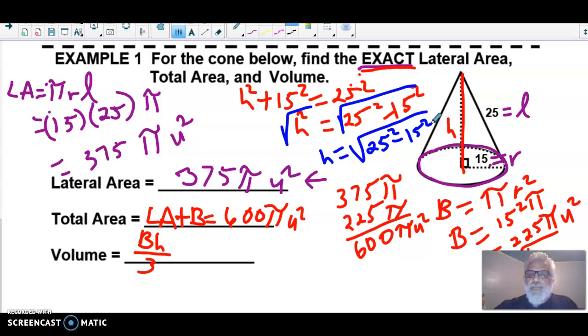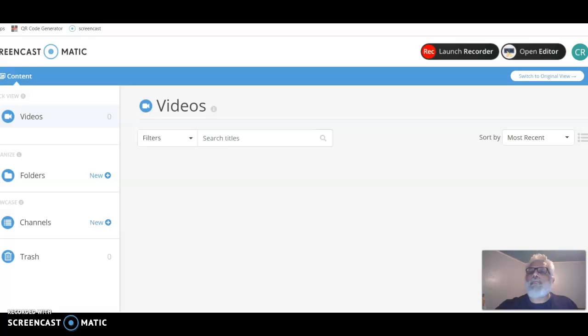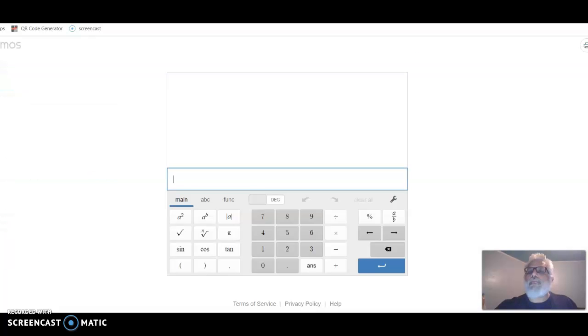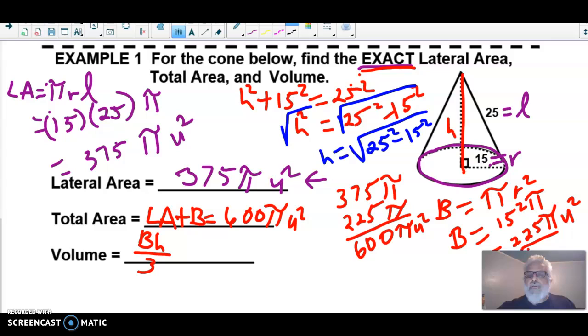Which will be, I do the square root, 25² minus 15², and I'll get 20. So I'll come back over here and I get that the height is equal to 20.